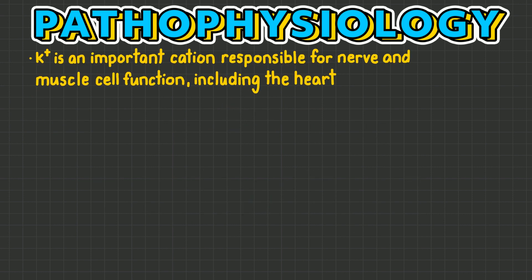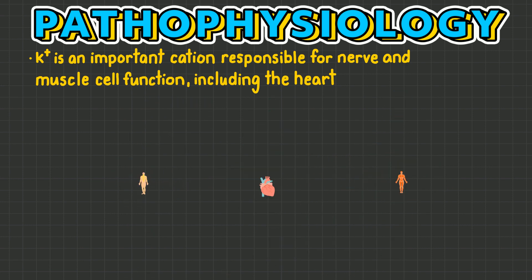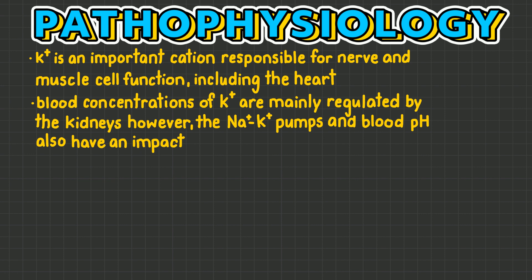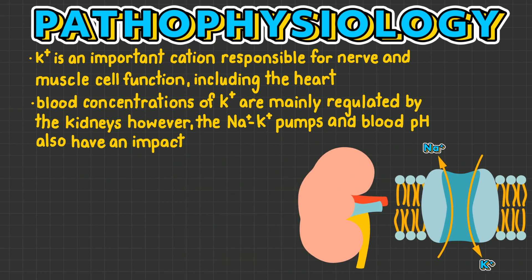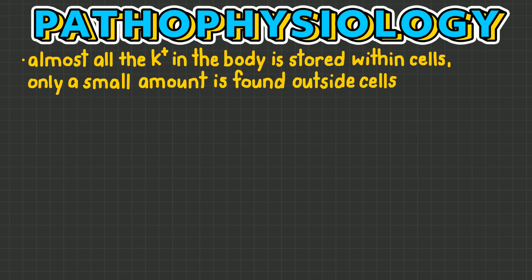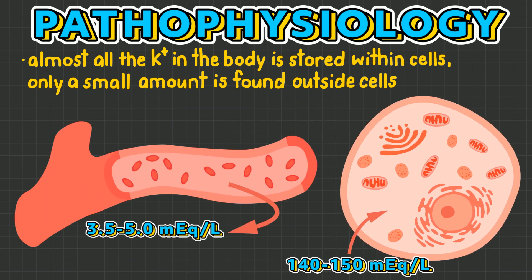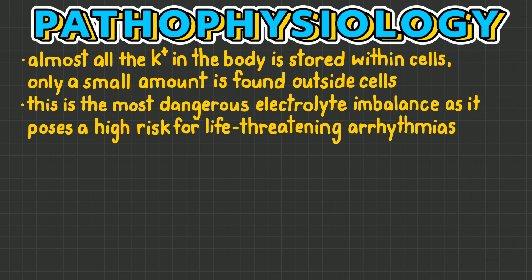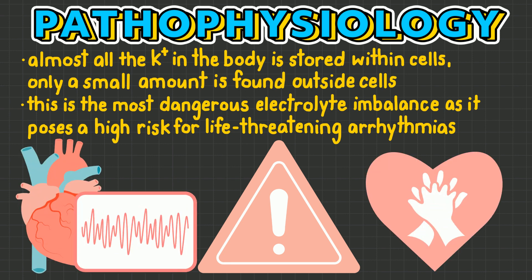Potassium is an important cation responsible for nerve and muscle cell function, including the heart. Blood concentrations of potassium are mainly regulated by the kidneys; however, the sodium-potassium pump and blood pH also have a role in this. Almost all the potassium within the body is stored within cells, and only a small amount is found outside of cells, such as in the bloodstream. Hyperkalemia is the most dangerous electrolyte imbalance as it poses a high risk for the development of life-threatening arrhythmias and cardiac arrest.